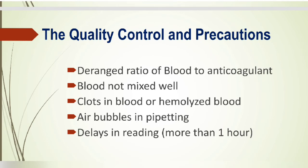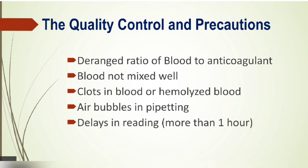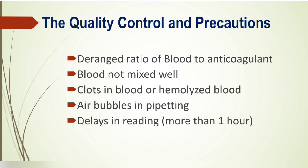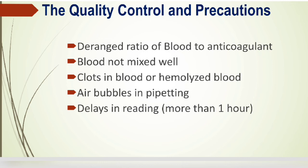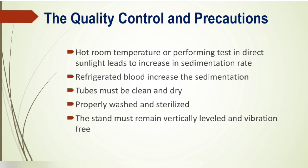Quality control and precautions: the ratio of blood to anticoagulant must be correct — one part anticoagulant to four parts blood. Blood must be mixed well after adding the reagent; clots or hemolyzed blood will cause defects. Air bubbles affect the volume in the pipette. Delays beyond one hour in reading will cause falsely elevated ESR values. Hot room temperature or direct sunlight exposure and use of refrigerated blood can also increase sedimentation rate. Tubes must be clean, dry, and properly sterilized, and the stand must remain vertically leveled and vibration-free — no centrifuge should be placed beside the stand.